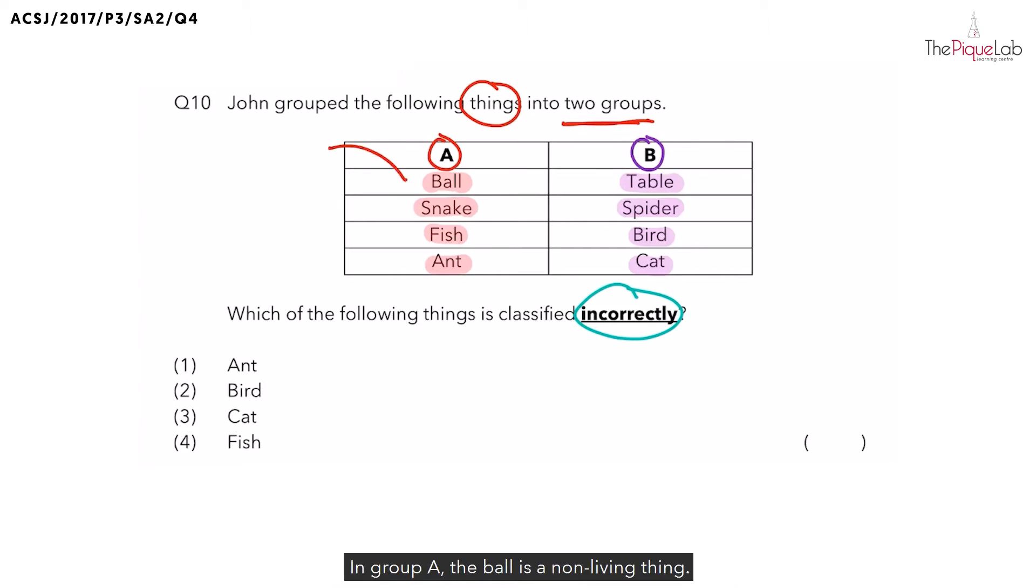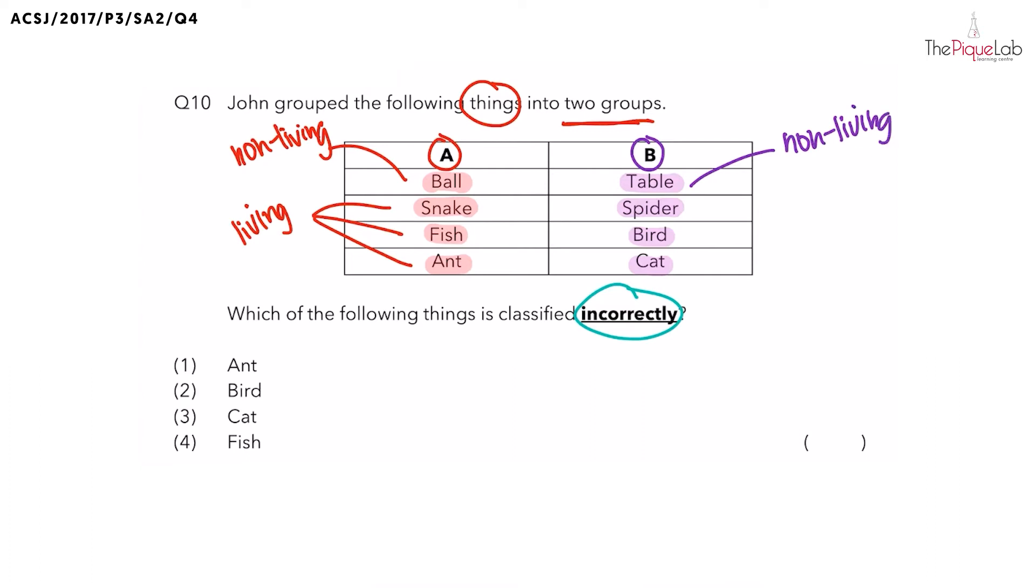In group A, the ball is a non-living thing, while the snake, fish, and ant are living things. In group B, the table is a non-living thing, while the spider, bird, and cat are living things.